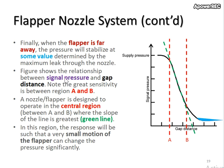The figure also shows greatest sensitivity is in between region A and B. We can see from this graph we have line A and line B, and the pressure drops as we increase the gap distance. Between line A and B, the slope is the greatest.